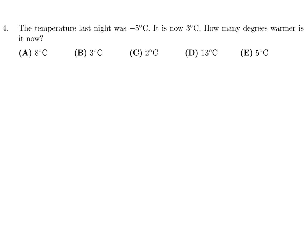The temperature last night was minus 5. It is now 3 degrees Celsius. How many degrees warmer is it now? So I guess you just go on the number line. So let's start at minus 5, and then 0, and then we have plus 3 approximately there.